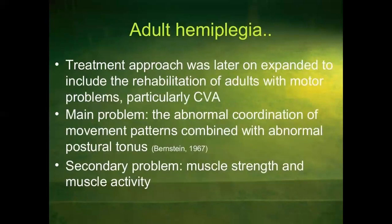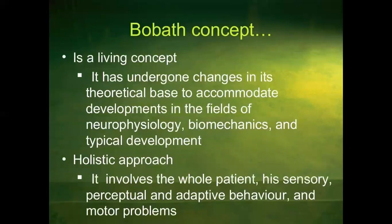In adult hemiplegia, the treatment approach was later expanded to include the rehabilitation of adults with motor problems, particularly CVA stroke. The main problem is the abnormal coordination of movement patterns combined with abnormal postural tone. The secondary problems are muscle strength and muscle activity. The Bobath concept is a living concept — it has undergone changes in its theoretical base to accommodate developments in neurophysiology, biomechanics, and typical development. A holistic approach involves the whole patient's sensory, perceptual, adaptive behaviour, and motor problems.